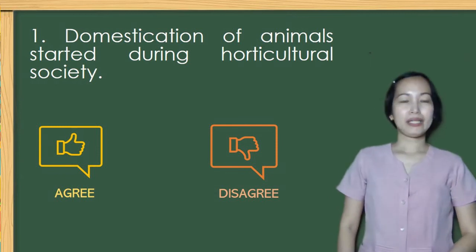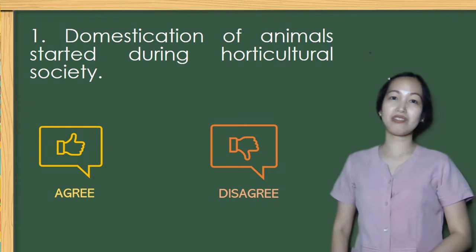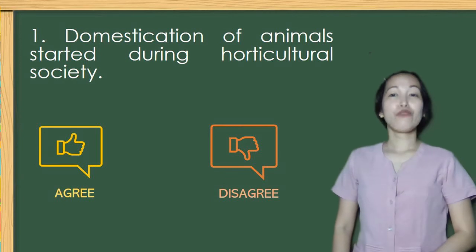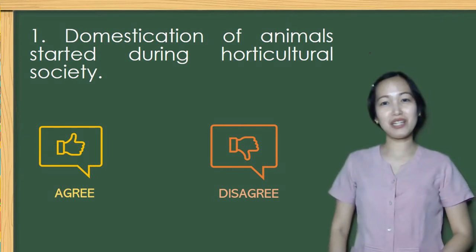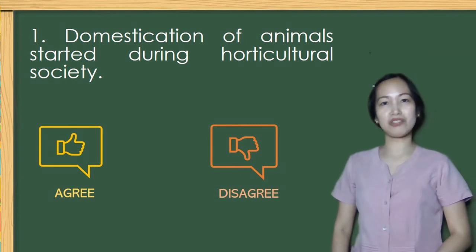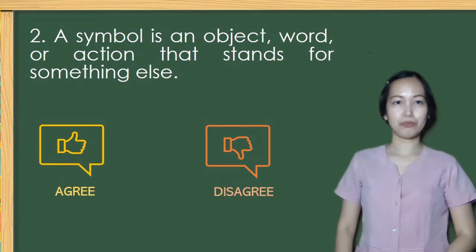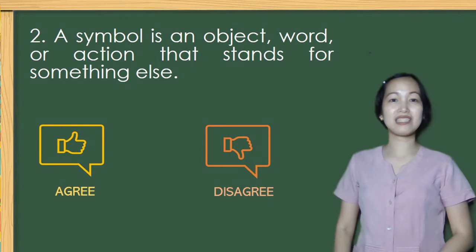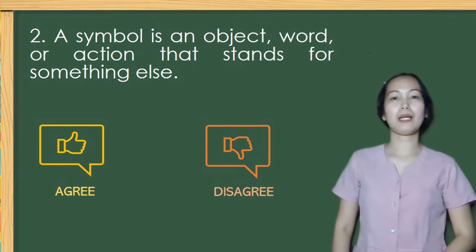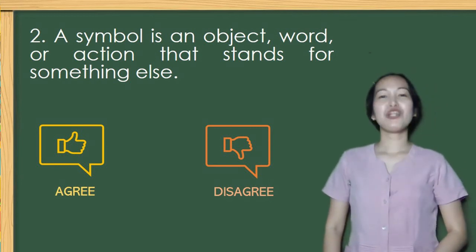Number 1. Domestication of animals started during horticultural society. Number 2. A symbol is an object, word, or action that stands for something else. If your answer to number 2 is agree, you are correct.